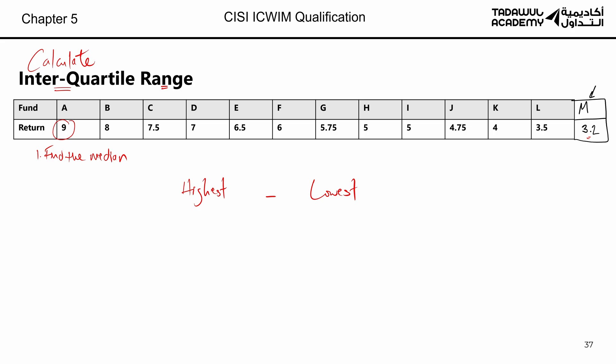Since we have 13 investments, let's count: 1, 2, 3, 4, 5, 6 — so G will be the median. You have six funds on one side (A to F) and six funds on the other side (H to M), so G is the median. That's the first step. Once you identify the median, you now have two separate sets: a bottom set and a top set.